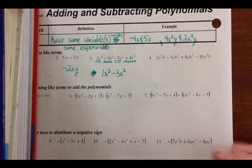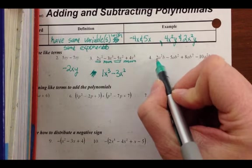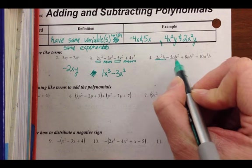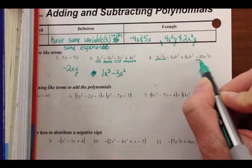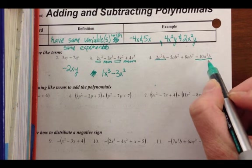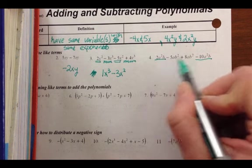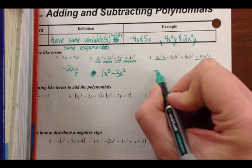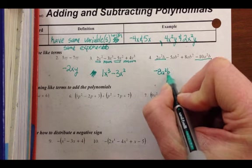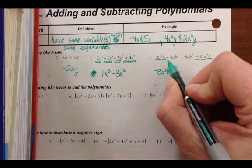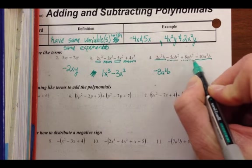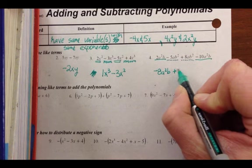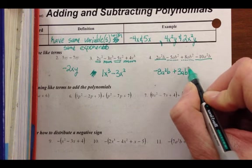How about number 4? This one's tricky, so you have to be really careful. We have an a squared b. That's not an a squared b. That's not an a squared b. This is an a squared b. 2 and negative 10. So negative 8a squared b. And the second one, ab squared. This is an ab squared. And when I combine them, I have 3ab squared.